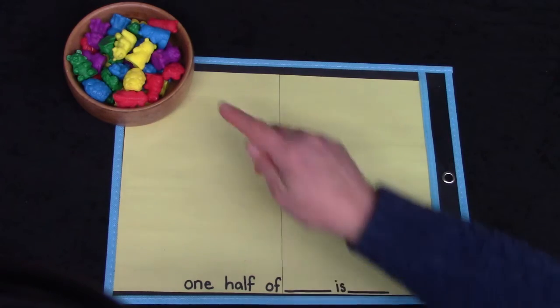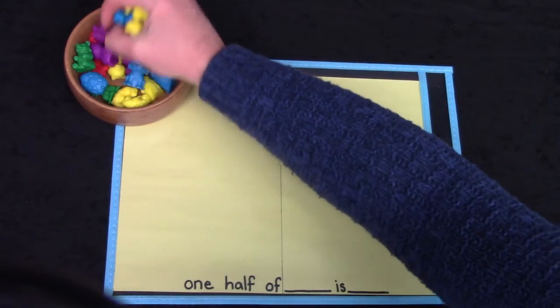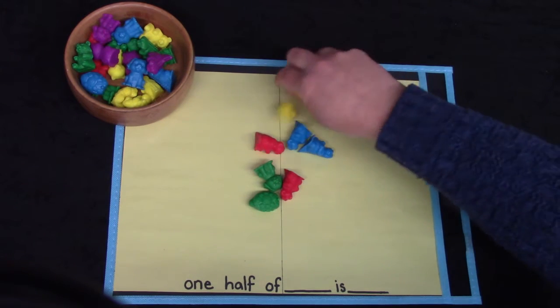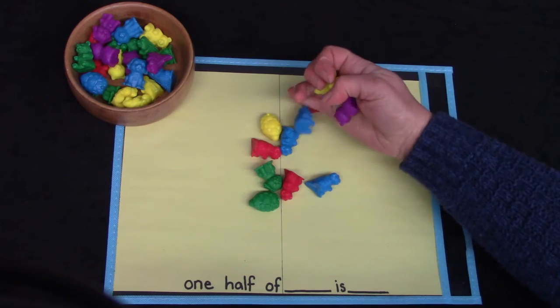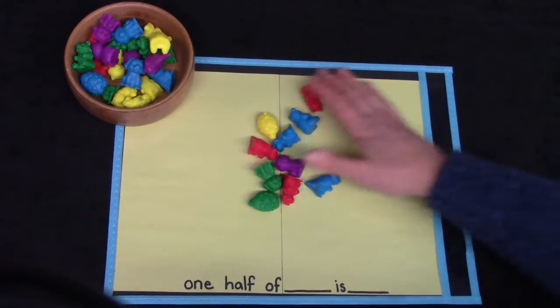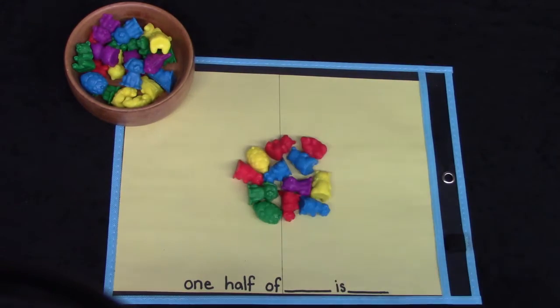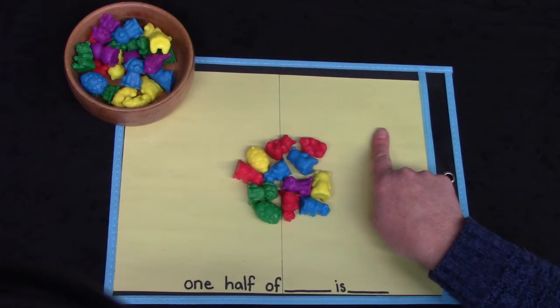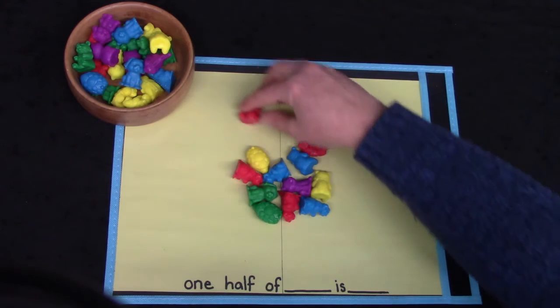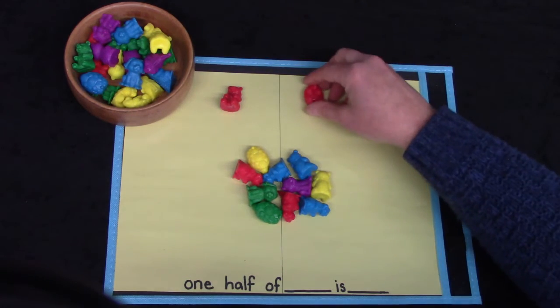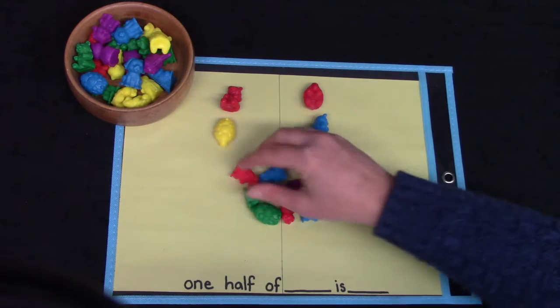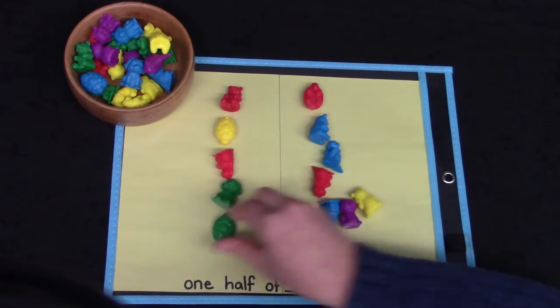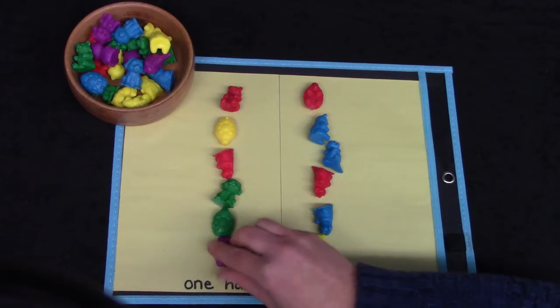When you have your piece of paper, I would like for you to get 12 little objects. One, two, three, four, five, six, seven, eight, nine, 10, 11, 12. Here I have 12 objects and I'm going to divide them evenly between the two sides of my paper. So I'm going to start off by putting one on this side and one on this side. I'm going to continue this one on each side until I have used all of my objects.